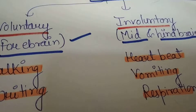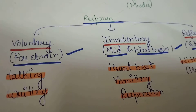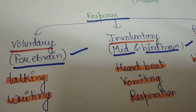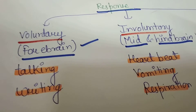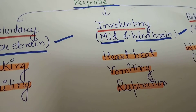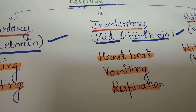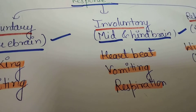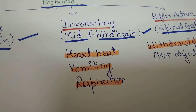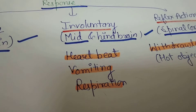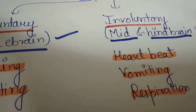Responses are of three types. First is voluntary, second is involuntary, and the last is reflex action. Voluntary response is in our control. Involuntary response is controlled by the mid and hindbrain — you can't control it. Reflex action is controlled by the spinal cord. Voluntary actions like talking and writing are controlled by the forebrain.